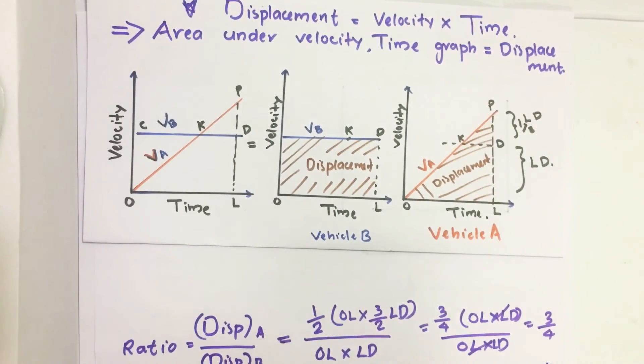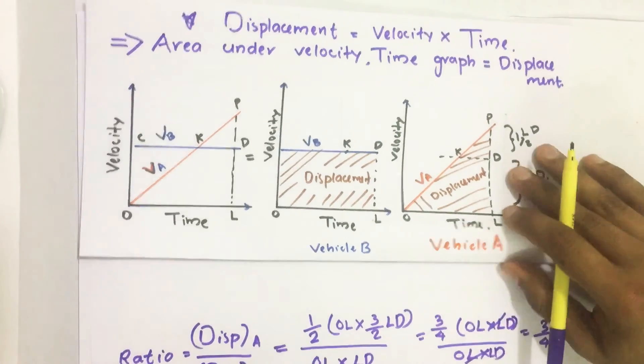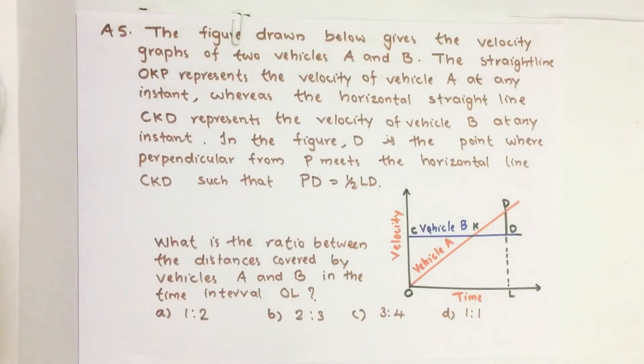The ratio of displacement of vehicle A to vehicle B we get as 3 is to 4. Our answer is option C, 3 is to 4.